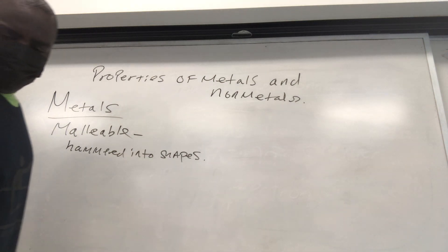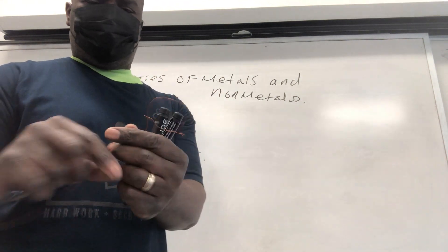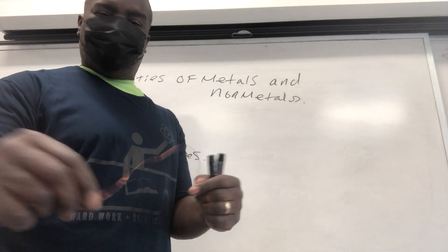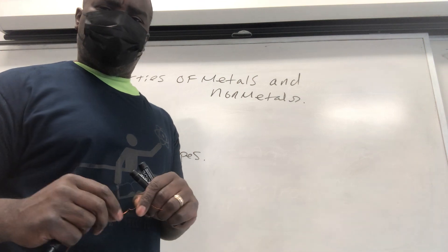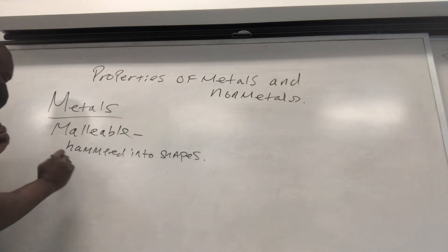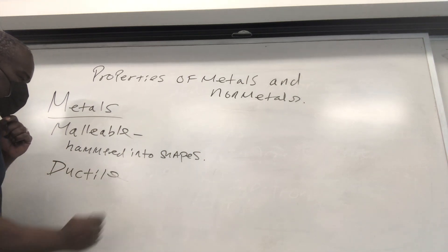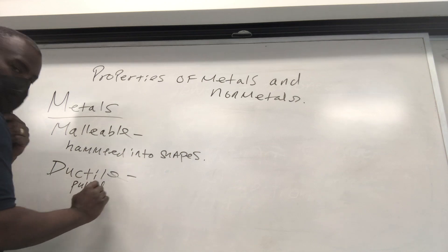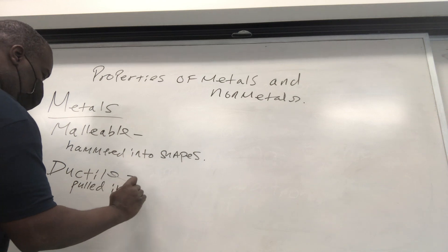The ability to draw a wire — you draw copper into wire, like what's inside electrical wiring — that's called ductility. So metals are also ductile. They can be pulled into wire.